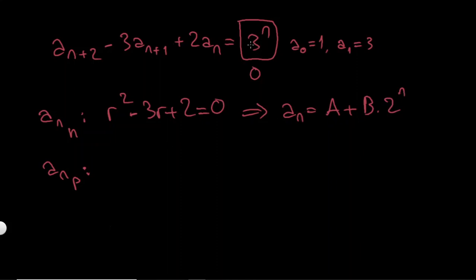And for a particular solution, I have 3 to the n on the right hand side. So it's pretty fair to guess the solution. This solution is going to be just 3 to the n. And let's also pick a constant because I don't know if it's just going to be 3 to the n or if it's going to be 4 times 3 to the n. We will see.